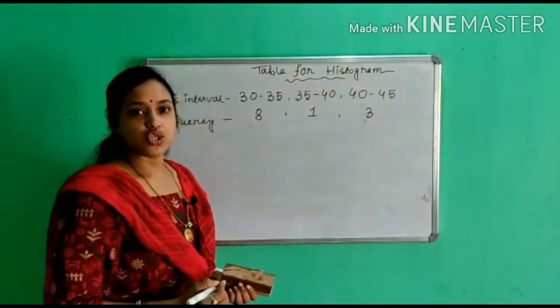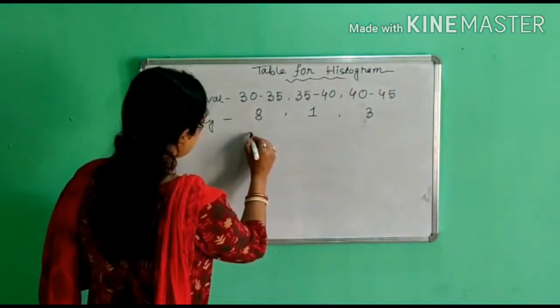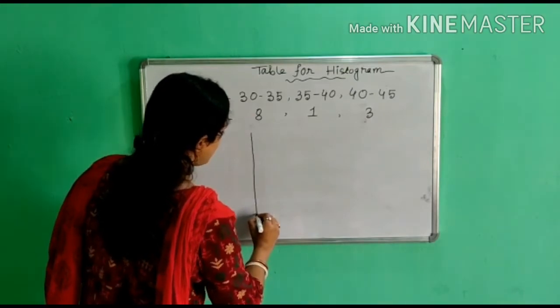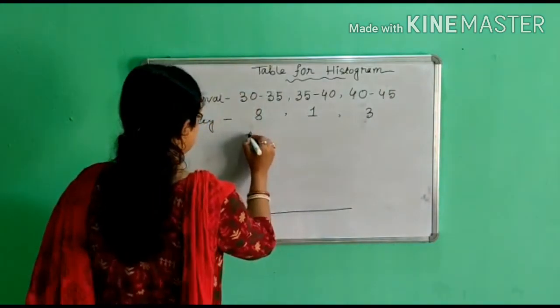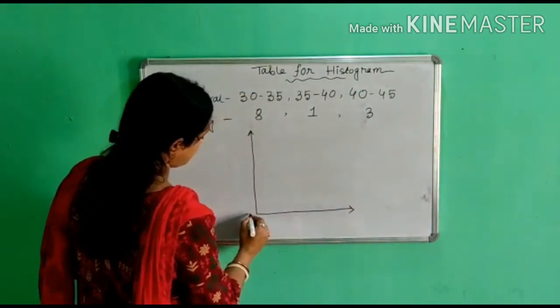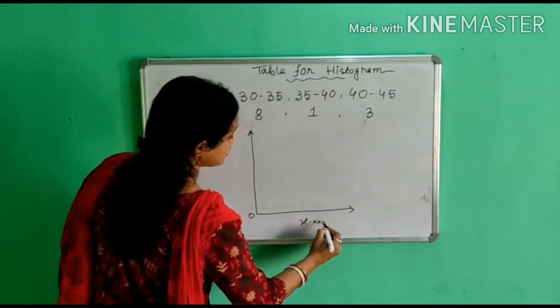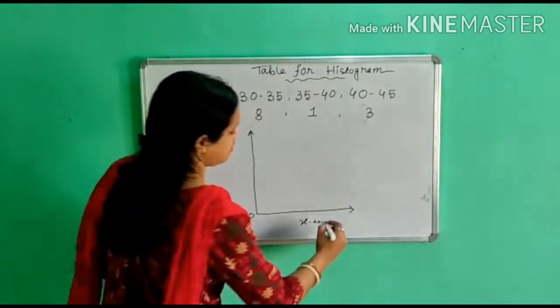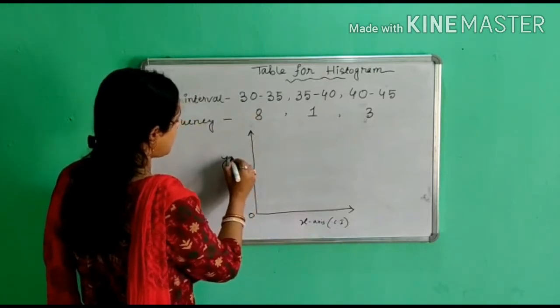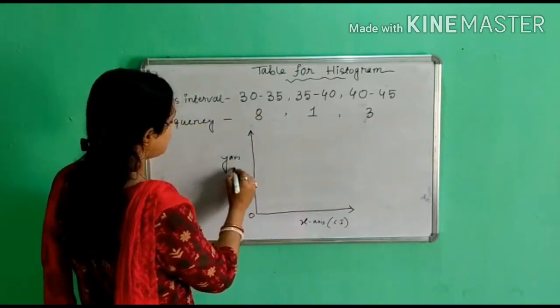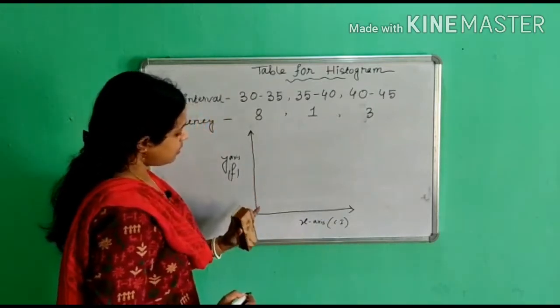Now let's see the construction process of histogram step by step. First of all we have to draw a vertical and horizontal line in a graph paper. So here I'm going to mark 0. This one is x-axis that represent class interval, and this vertical line is y-axis represent frequency.